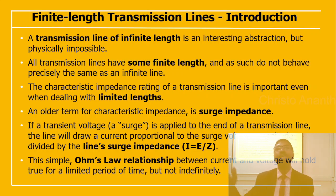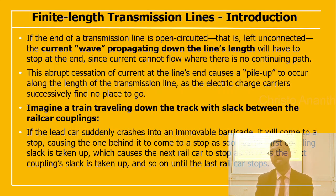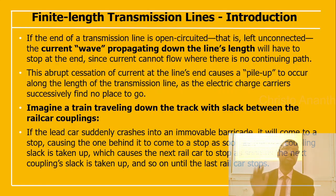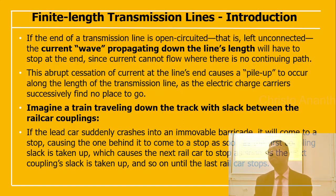If the end of the transmission line is open-circuited — left unconnected — the current wave propagating down the line will stop at the end since current cannot flow without a continuing path. This causes a pileup to occur along the length of the transmission line as electric charge carriers successively find no place to go.